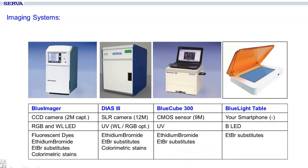To document or detect your gels and make photographs, there is a huge variety of systems you can buy from other companies or from Serva. This always depends on what you do and what you use for staining, labeling, or fluorescent staining. We have a wide variety from UV to LED technology, from large machines to very small ones. The best thing is to tell us what method you have and we will give you a recommendation for the best imaging system for your application.